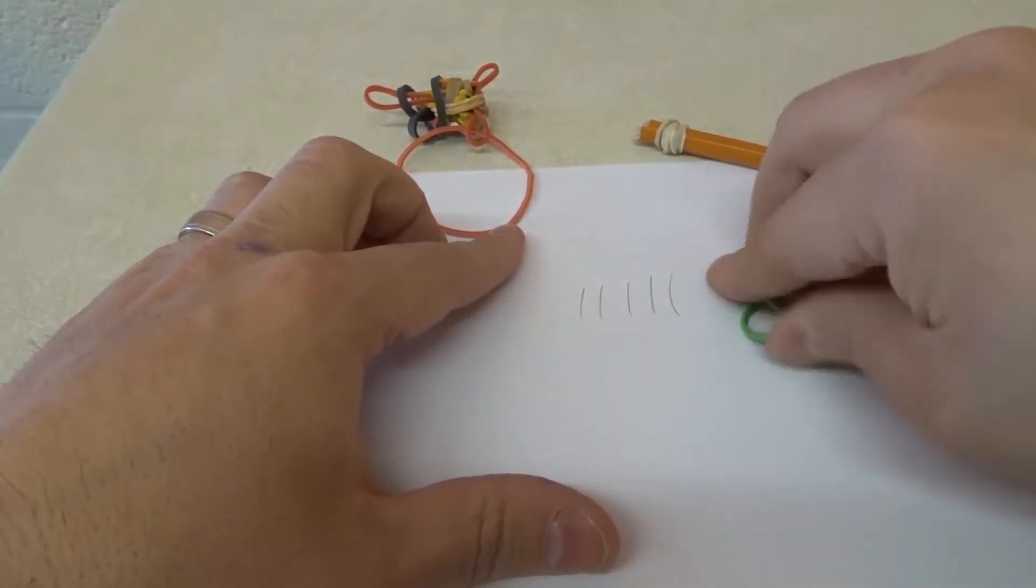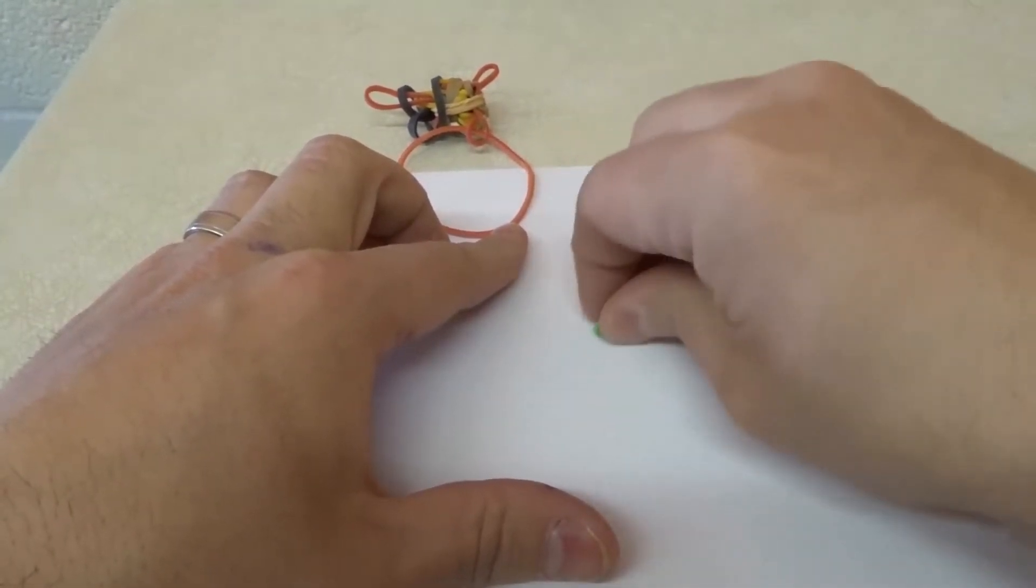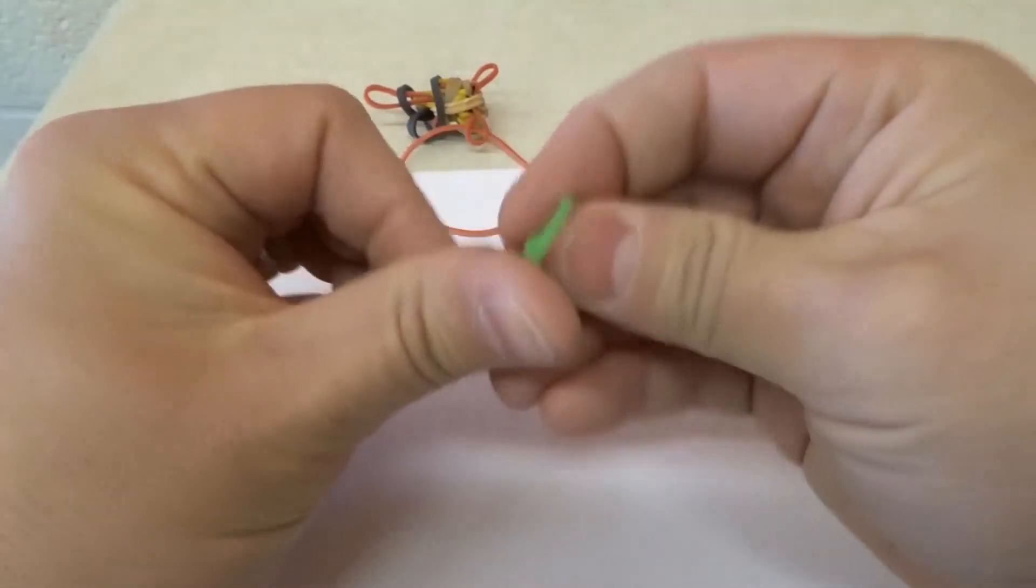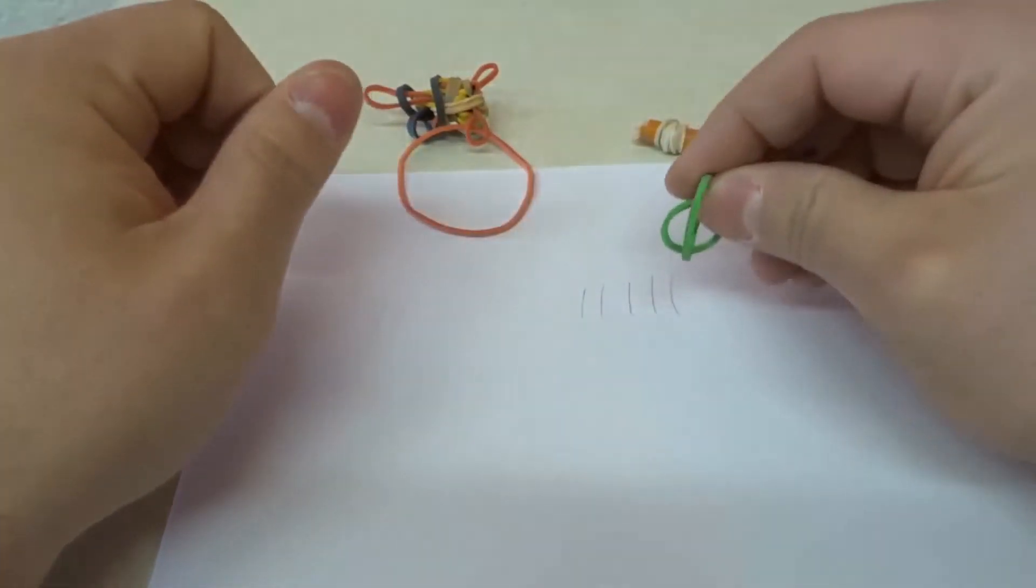It still will erase, but it won't do a great job, right? It would take a very long time to erase it because it's moving back and forth. You're not getting the rubber band to rub, you're not getting the rubber to rub against the pencil.